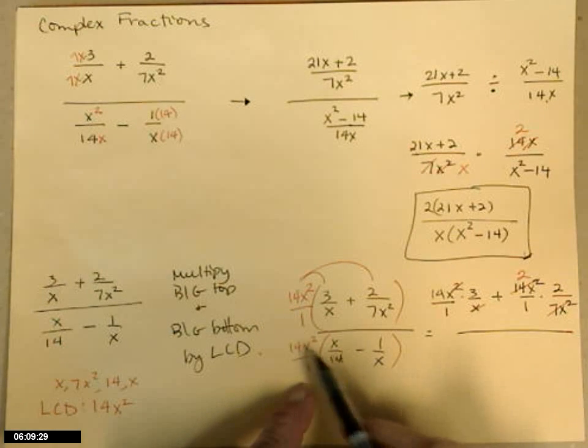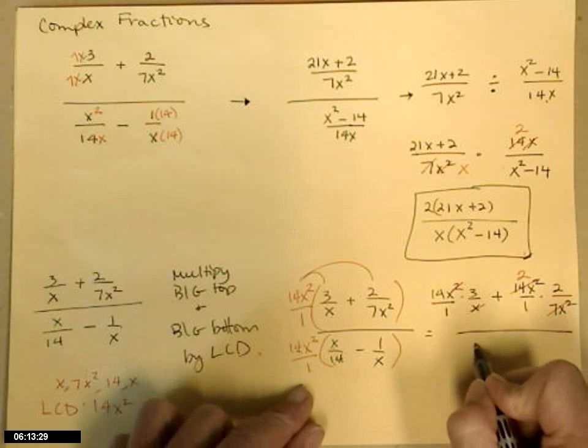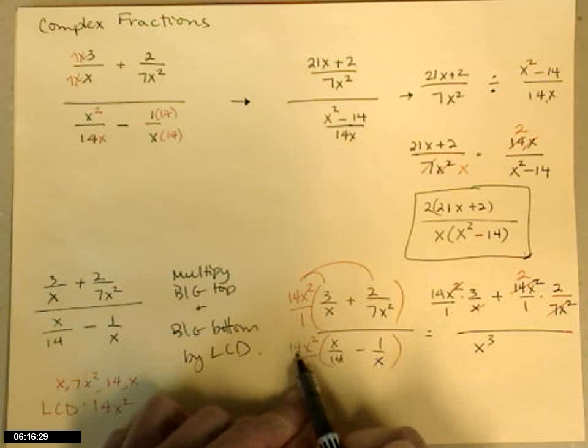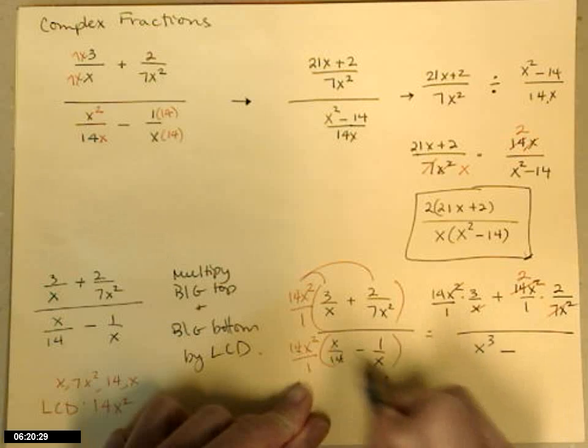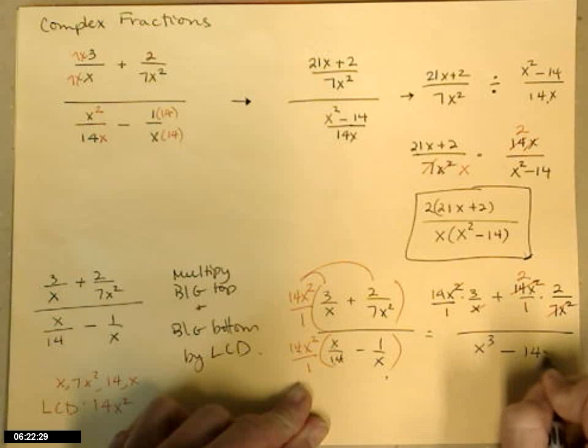14x squared times this first one, the 14s will cancel. I'm left with x squared times x, x cubed. 14x squared times 1 over x, the x's cancel. I'm left with minus 14x.